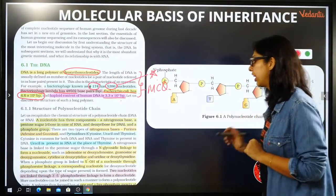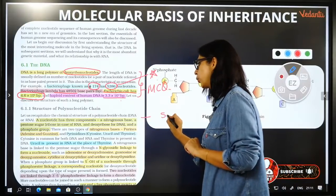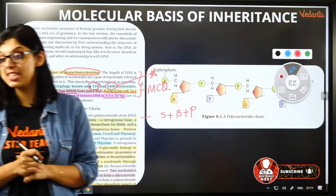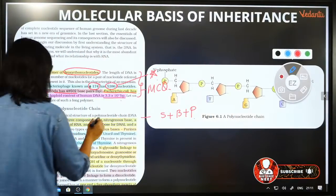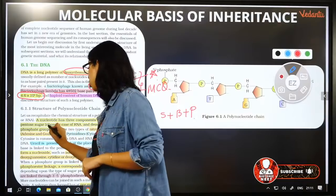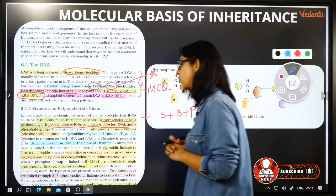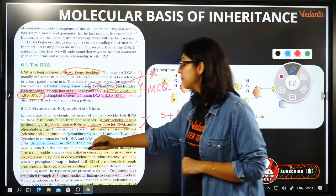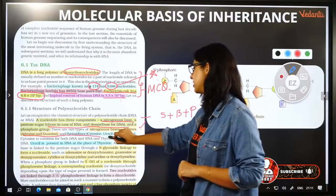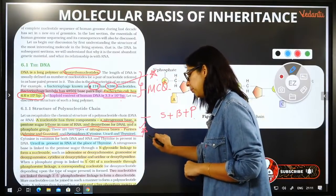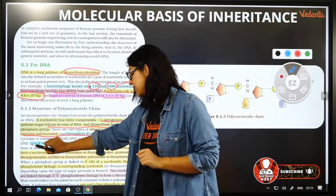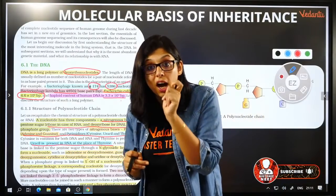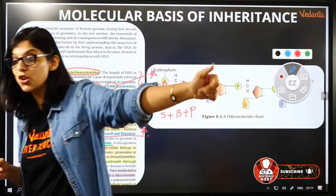A nucleotide has three components: sugar, base, and phosphate. Nitrogenous bases include purines — adenine and guanine — and pyrimidines — cytosine, uracil, and thymine. Uracil is present in RNA in place of thymine. Ribose is the sugar in RNA; deoxyribose is the sugar in DNA. Every line here is an MCQ question — yes or no?